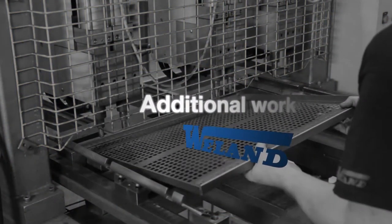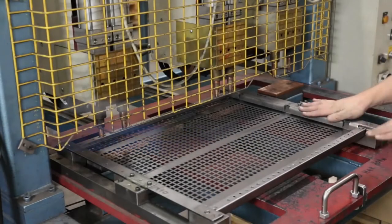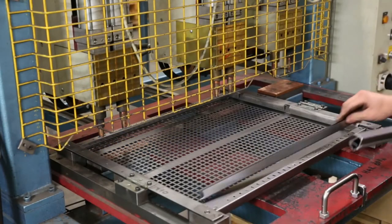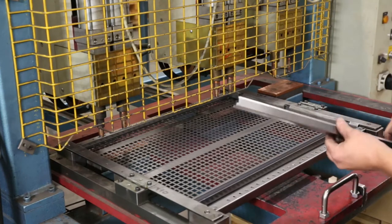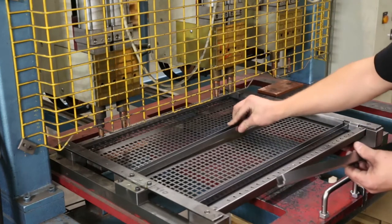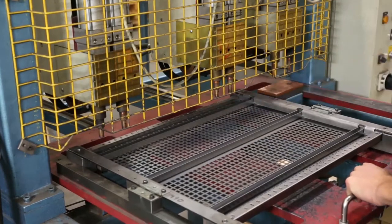Additional work. Directly adjoining the panel folding, we can carry out assembly or additional works, as in this case, spot welding guide rails onto the panel.